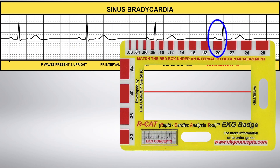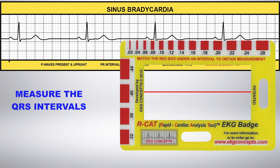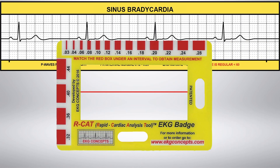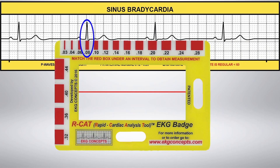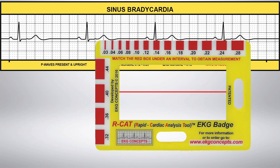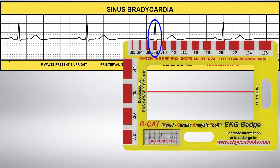Now measure the QRS intervals. The QRS is consistently .08, putting it in the normal range of less than .12.